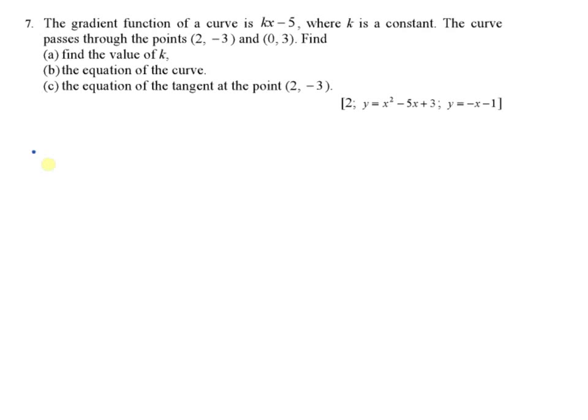Example 7. The gradient function of a curve is dy/dx equal to kx minus 5. You see that there is an unknown here, k. The curve passes through two points: (2, -3) and (0, 3).